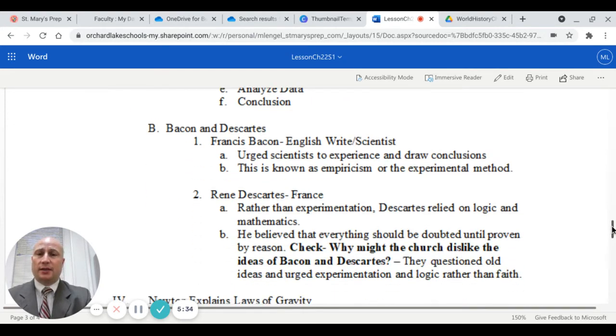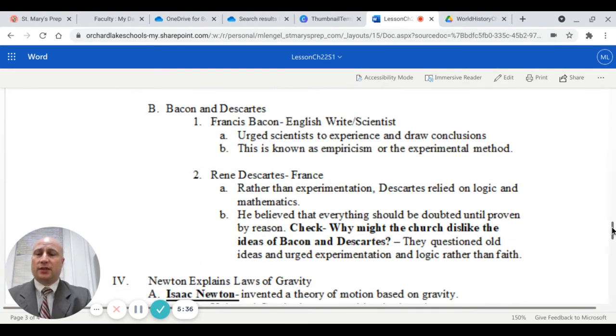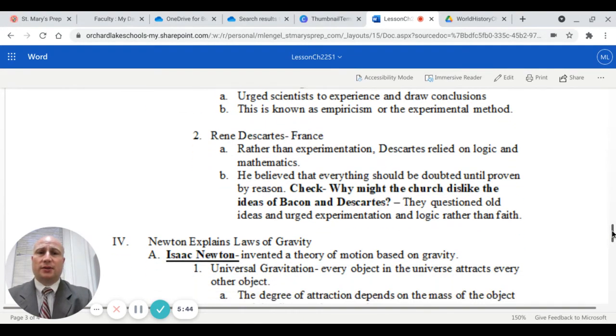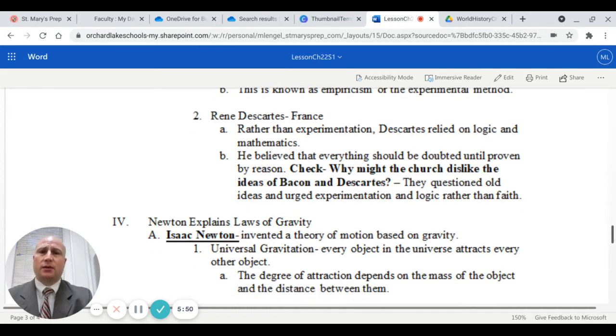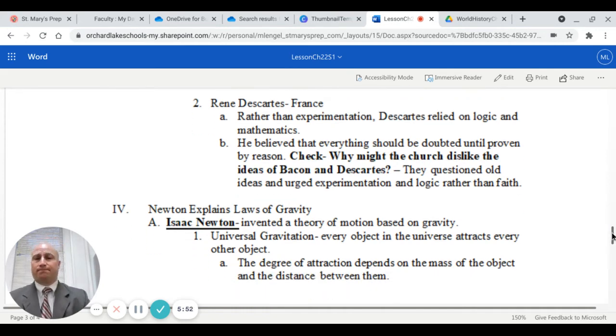Francis Bacon and Rene Descartes were some of the early folks that utilized a form of the scientific method. Francis Bacon was an English writer and scientist. He urged scientists to experiment and draw conclusions. This became known as empiricism or the experimental method.